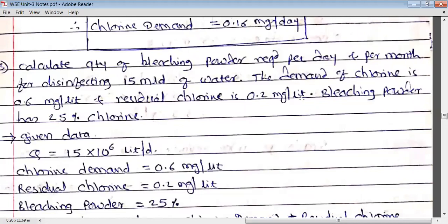15 MLD — MLD stands for million liters per day, where million means 10 to the power 6. The demand of chlorine is 0.6 mg per liter, and the residual chlorine is 0.2 mg per liter. Bleaching powder has 25% chlorine.